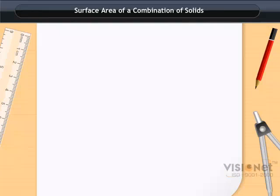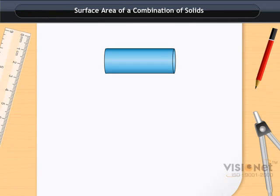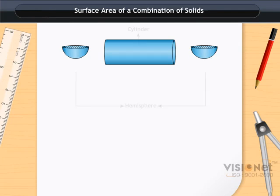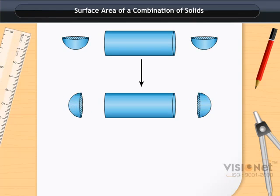Surface Area of a Combination of Solids. Let us consider solids that are cylinder and two hemispheres as shown. If we stuck these hemispheres at the end of the cylinder, it will look like this.